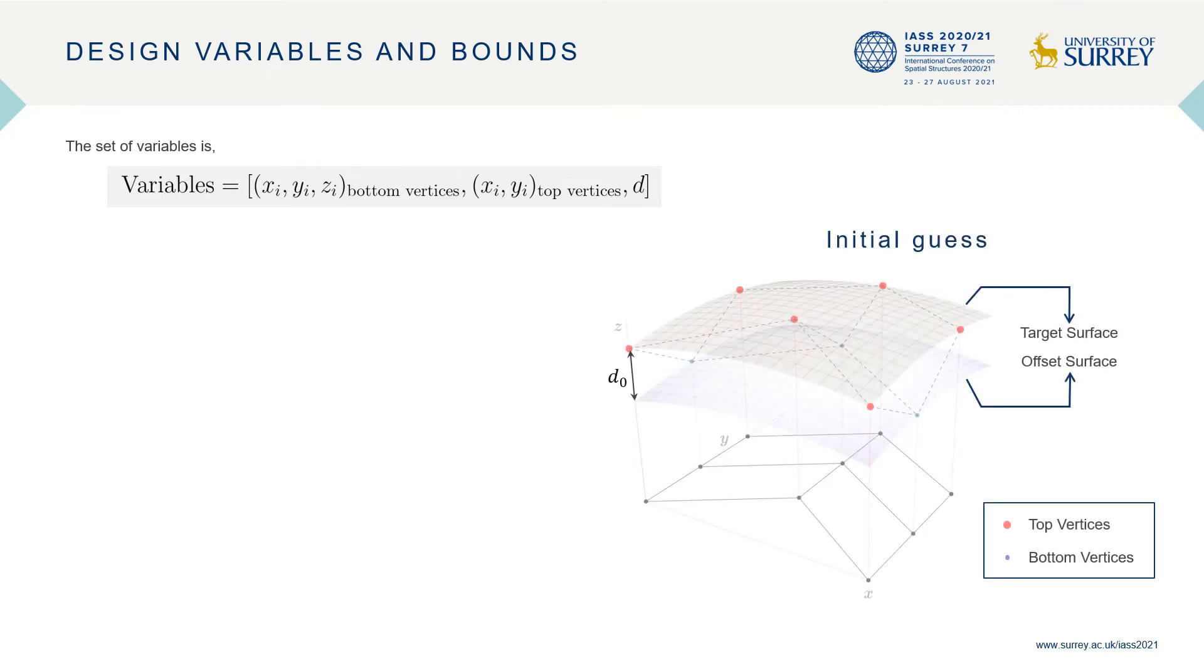The initial guess for the solution procedure is obtained by projecting the standard Miura pattern's vertices onto the target surface and an offset surface as shown here.